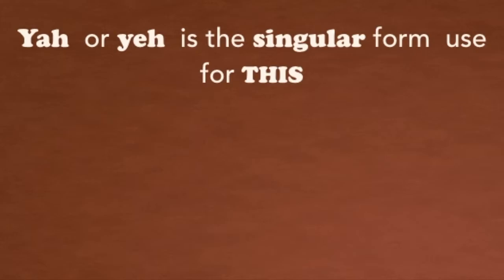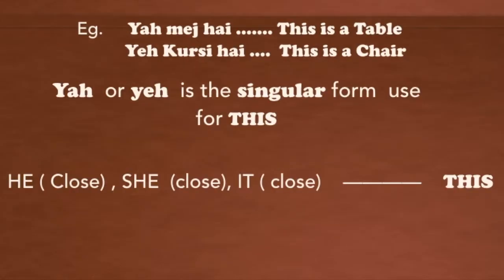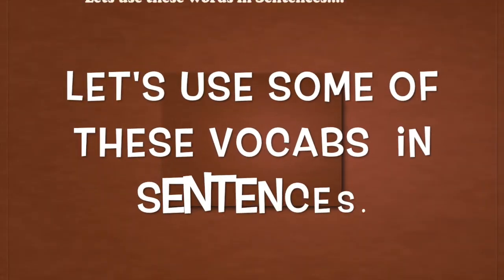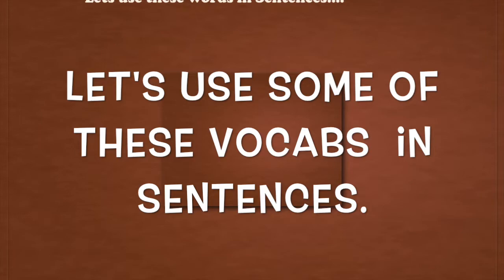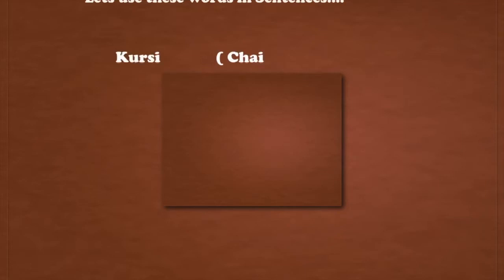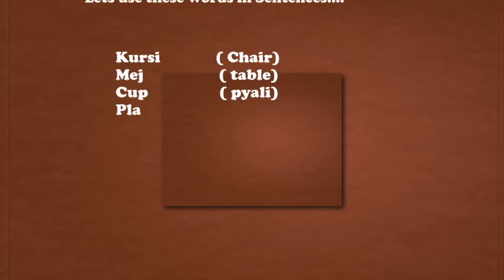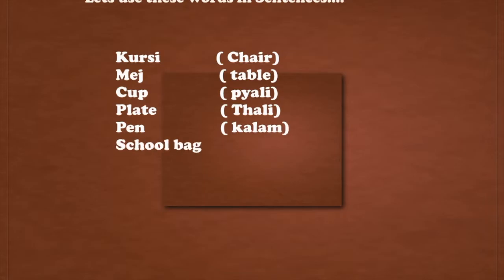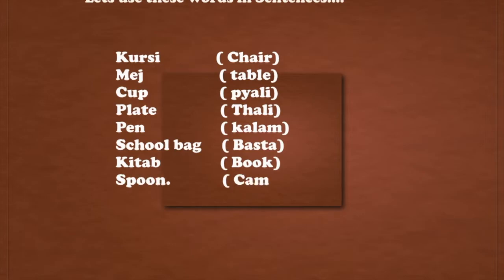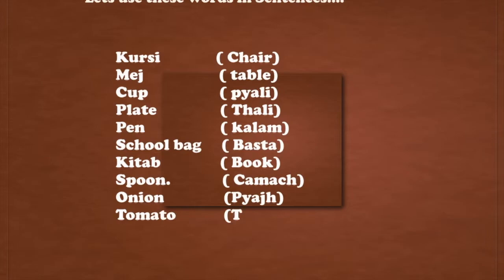Yaha is used for the singular form — for 'this,' whether referring to he, she, or it. Let's use some vocabulary words in sentences. The words are: kursi means chair, mej means table, pyali means cup, thali means plate, kalam means pen, basta means school bag, kitab means book, chammach means spoon, pyaz means onion, tamaatar means tomato, and aalu means potato.